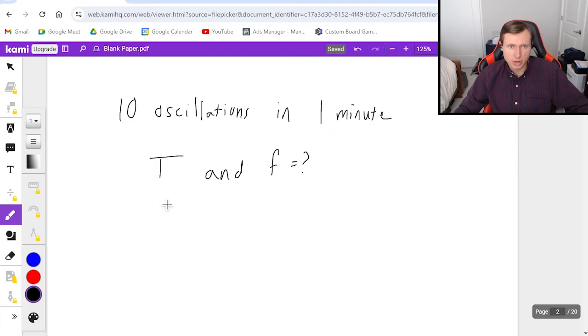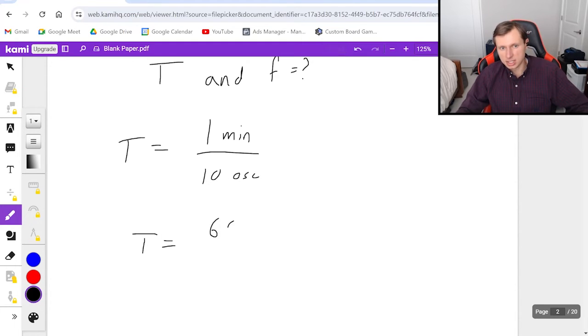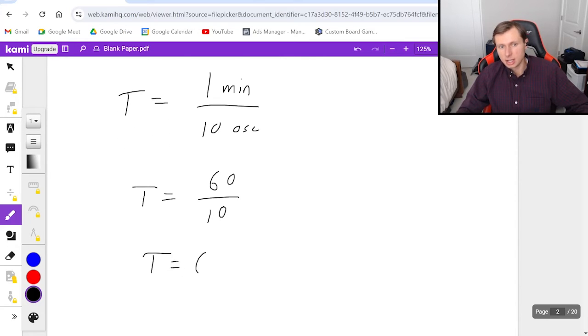So this is very easy. T the period is equal to time per oscillation. It's one minute over 10 oscillations. Technically I can't use minutes, I got to convert that to seconds. So one minute is 60 seconds. In other words, T equals 60 over 10. 60 divided by 10 is six. In other words, the period is six seconds.